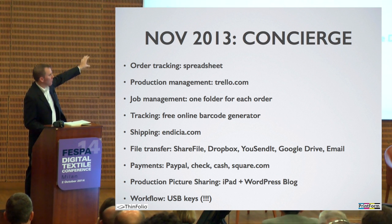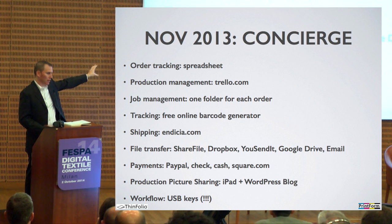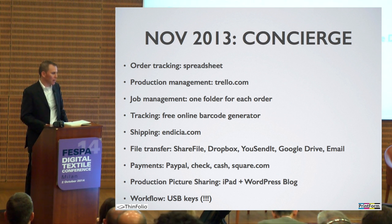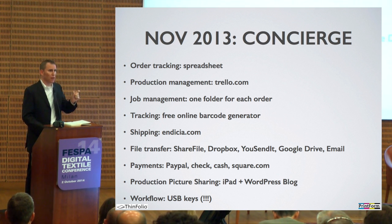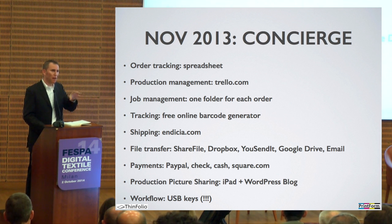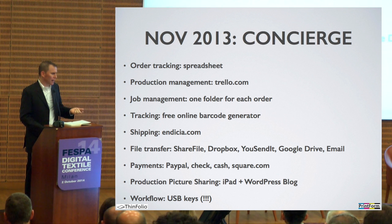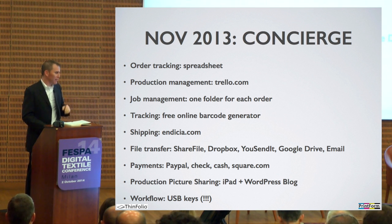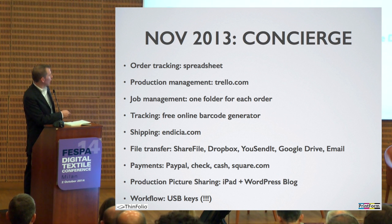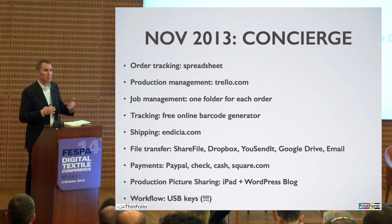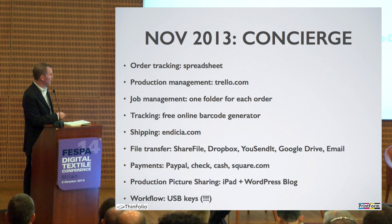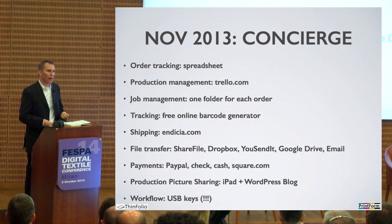Here's basically all the activities and tools we were using initially: tracking things in spreadsheets, using Trello for production management, creating a folder for each job with all the images from the consumer. We were generating barcodes with a free online barcode generator. For file transfer we were using Sharefile, Dropbox, YouSendIt, Google Drive, email — trying to get images any way we possibly could. Same thing with payments: PayPal, check, cash, Square. Very, very challenging to keep track of all these details.